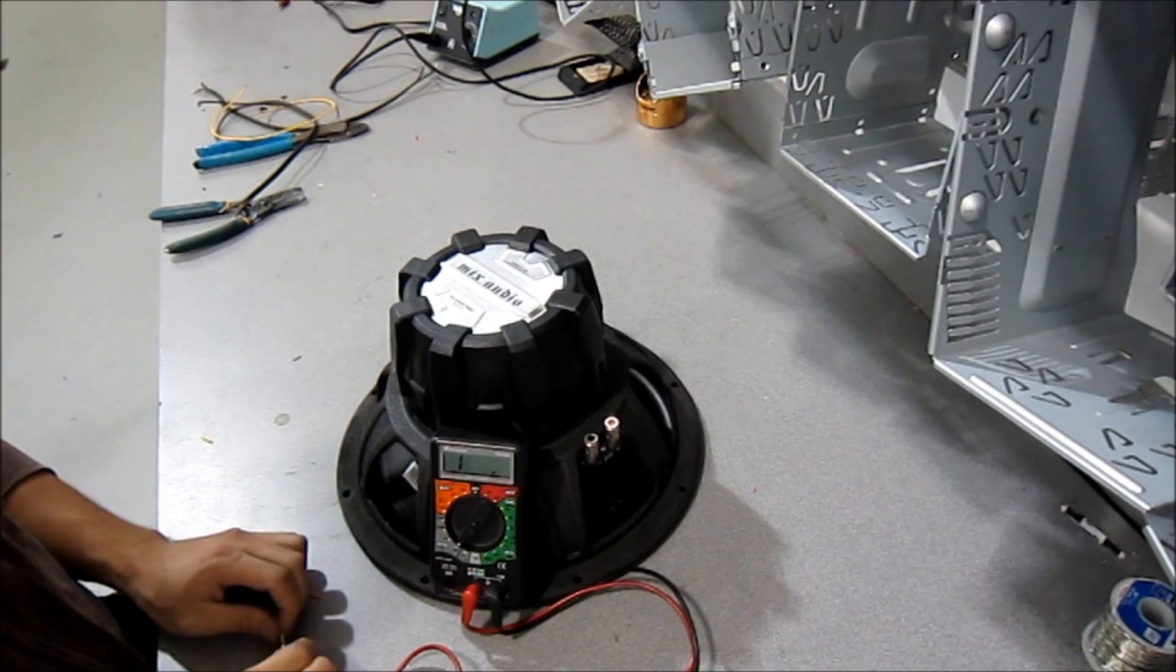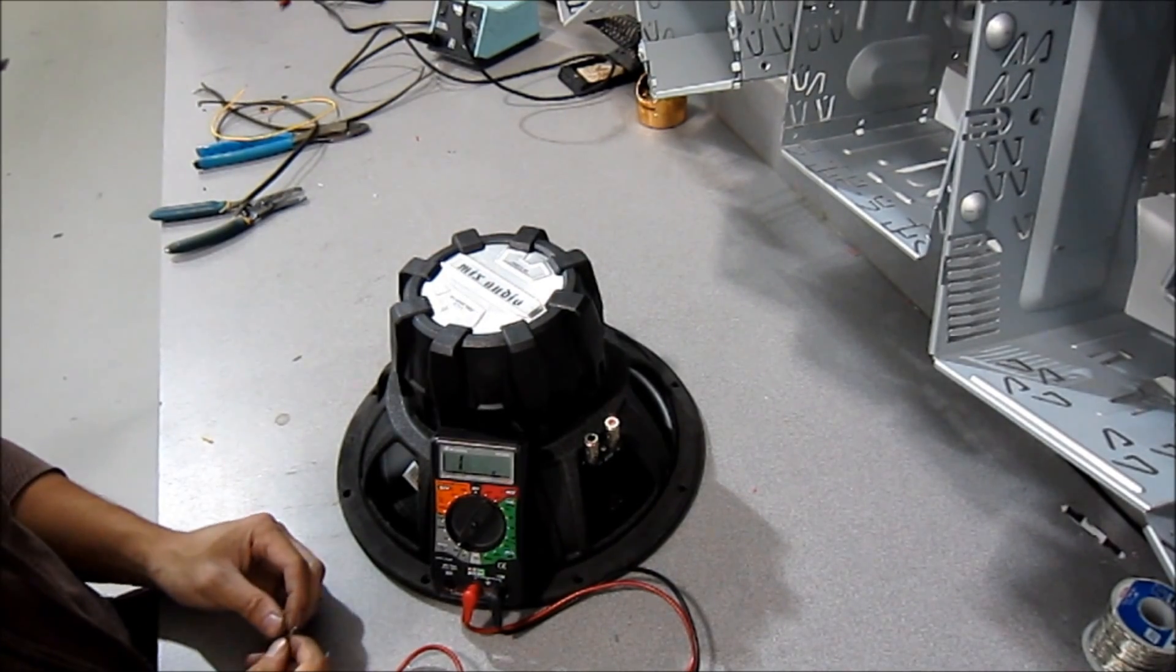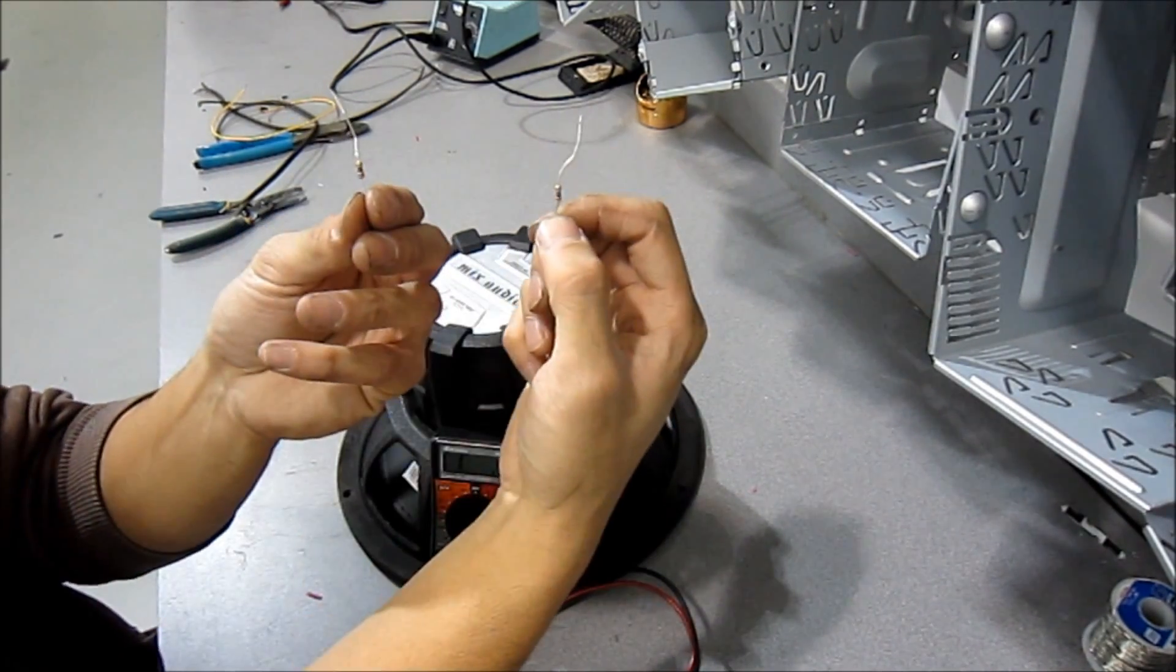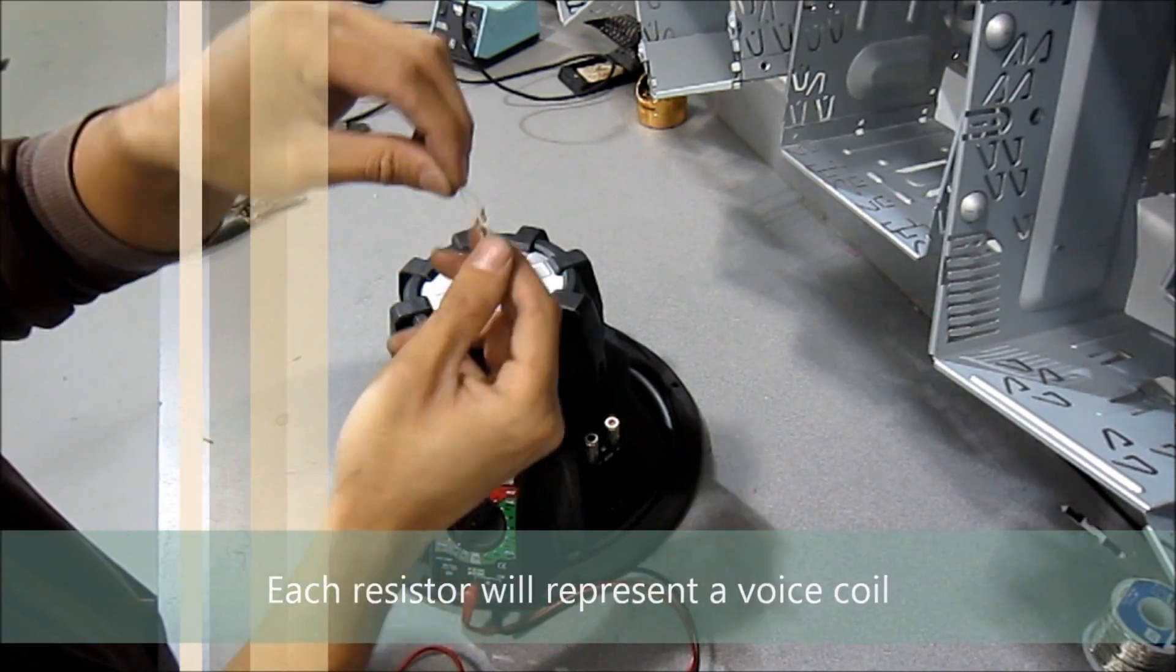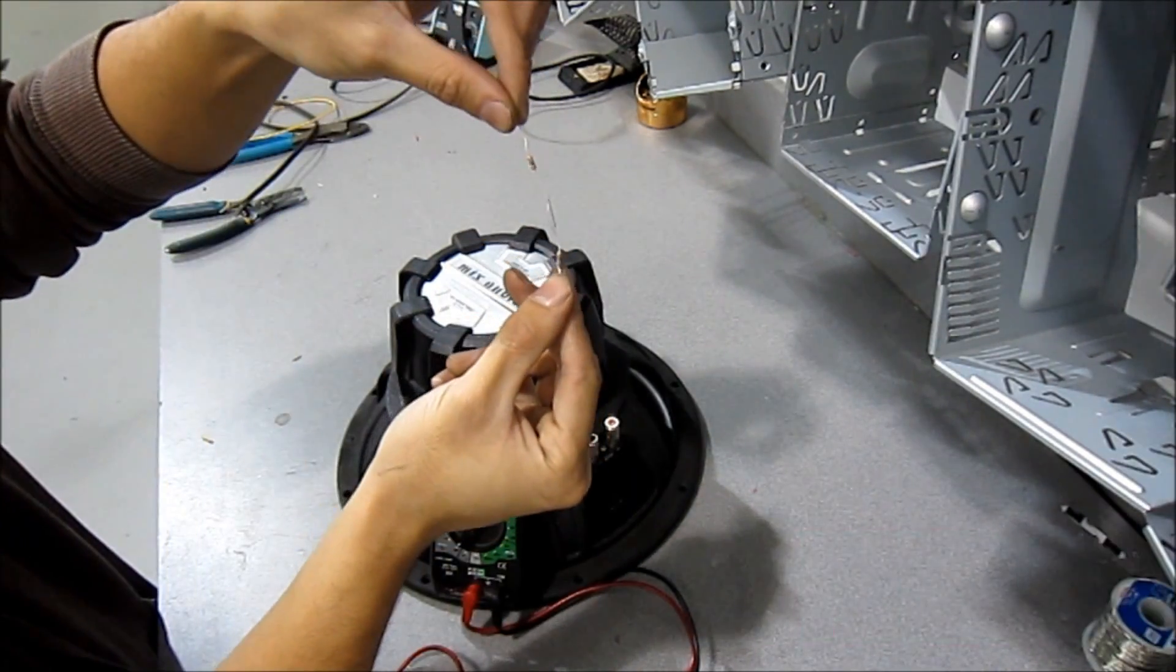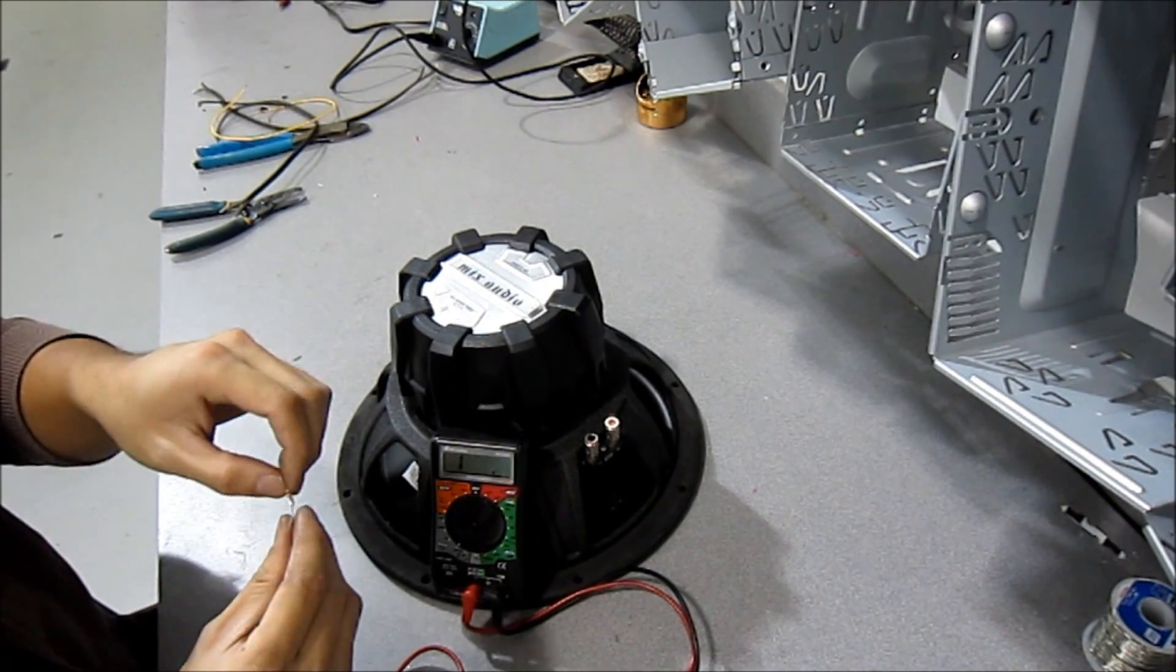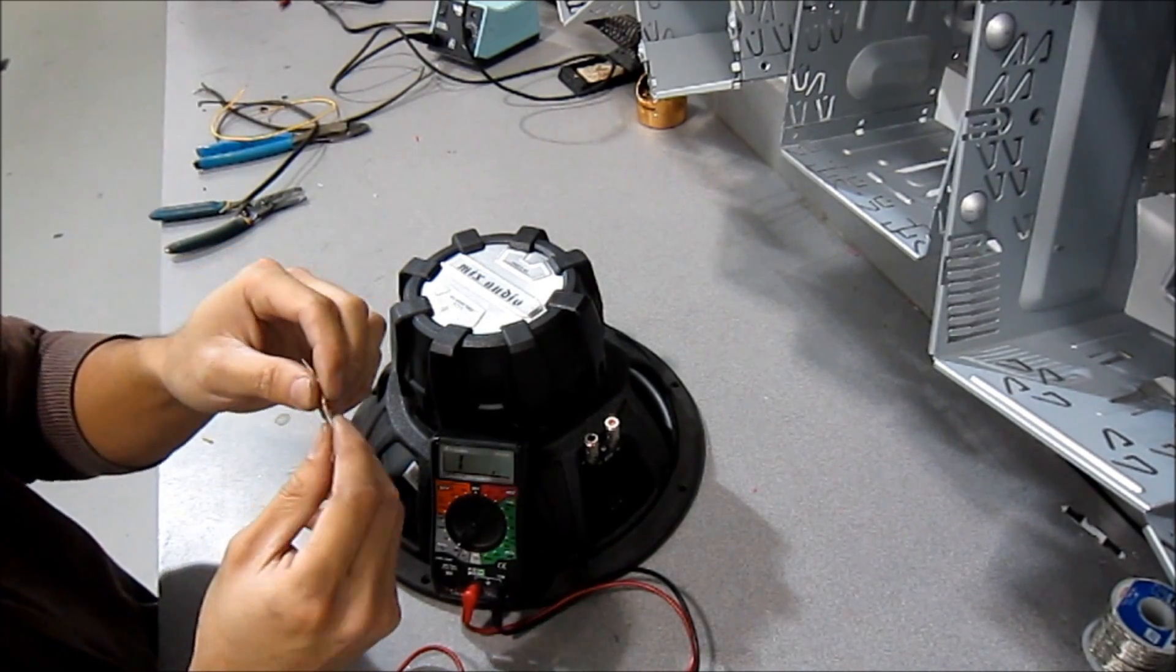So I know this might still be a little bit confusing, so I'm going to try to simplify it some more. So I have two resistors here as an example. Both are 20 ohms each. I'm going to show you the difference between wiring things in parallel or in series.